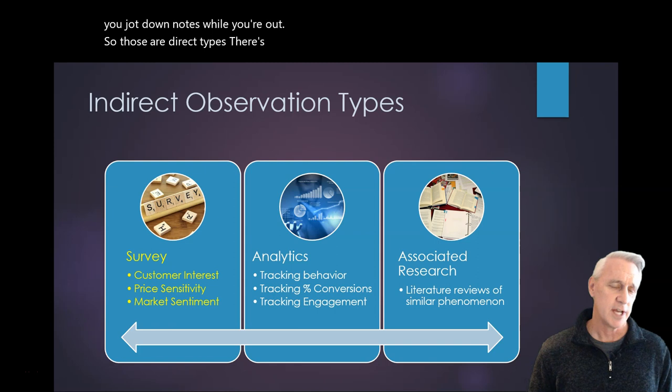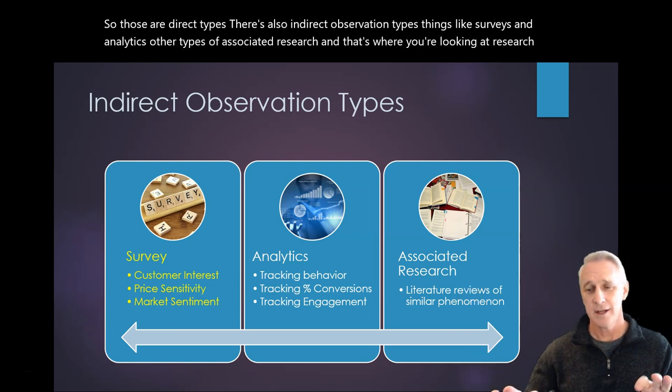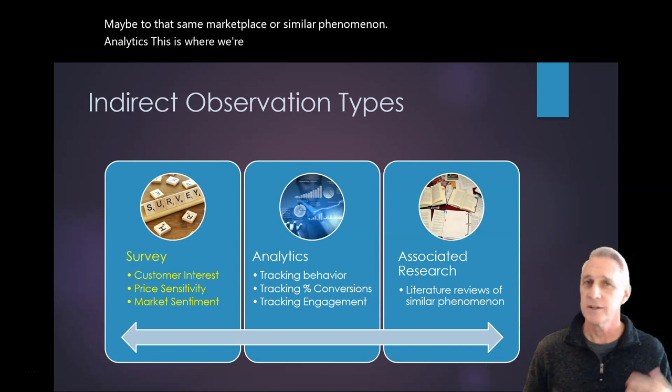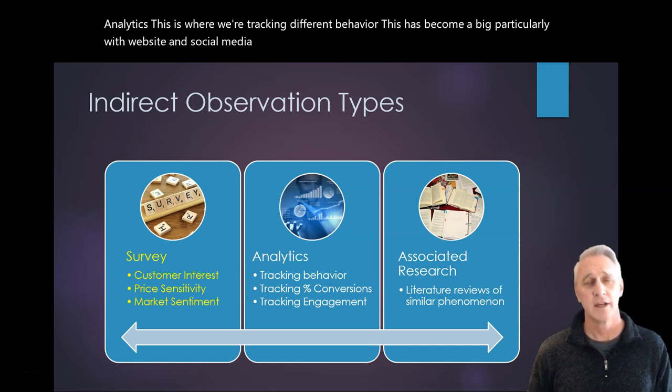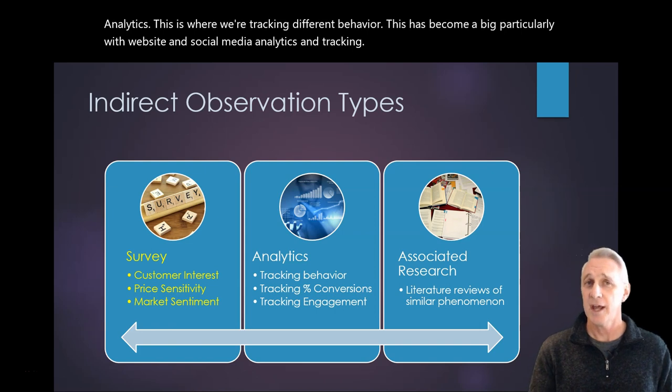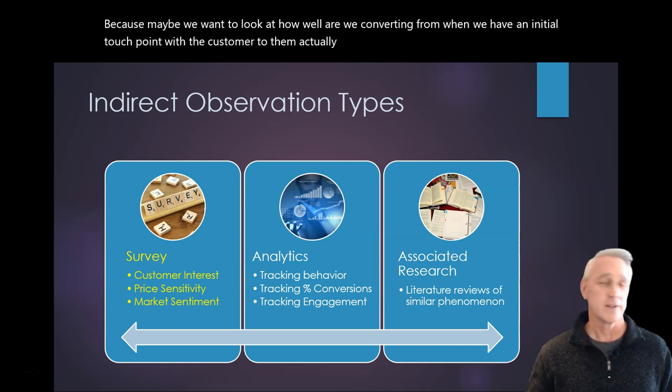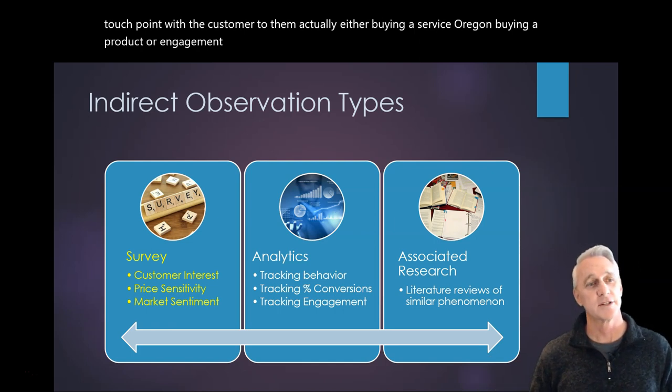So those are direct types. There's also indirect observation types, things like surveys and analytics, other types of associated research, and that's where you're looking at research that ties in maybe to that same marketplace or similar phenomenon. Analytics, this is where we're tracking different behavior. This has become big, particularly with website and social media analytics and tracking because maybe we want to look at how well are we converting from when we have an initial touch point with a customer to them actually either buying a service or buying a product or engagement, if that's the business that you're in.